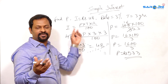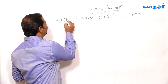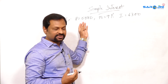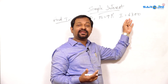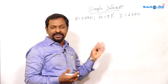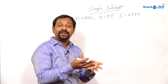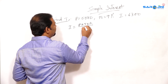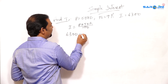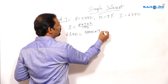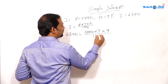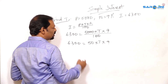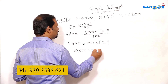It may be principal, it may be rate, it may be time. We check one more question — here you have to find out the time period. The principal amount is 5000, that means we borrowed 5000 from outside. The rate of interest is 9%, and the interest is 6300. For 5000 we are paying 6300 as interest. So how much time do we need? The formula: I is equal to P into T into R by 100. I is 6300, P is 5000, T is unknown, R is 9%, divided by 100. Cancelling 2 zeros: 6300 is equal to 50 into T into 9.